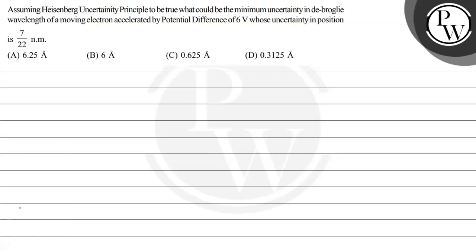Let's read this question. The question says: assuming Heisenberg's uncertainty principle to be true, what could be the minimum uncertainty in the de Broglie wavelength of a moving electron accelerated by a potential difference of 6 volts, whose uncertainty in position is 7/22 nanometer? We have four options. The key concepts here are: